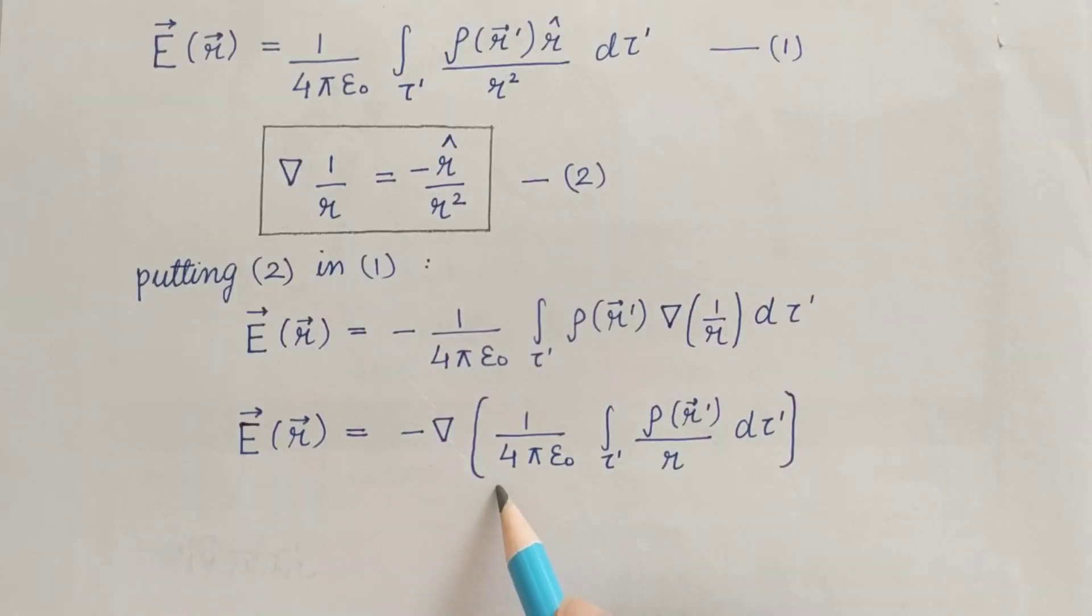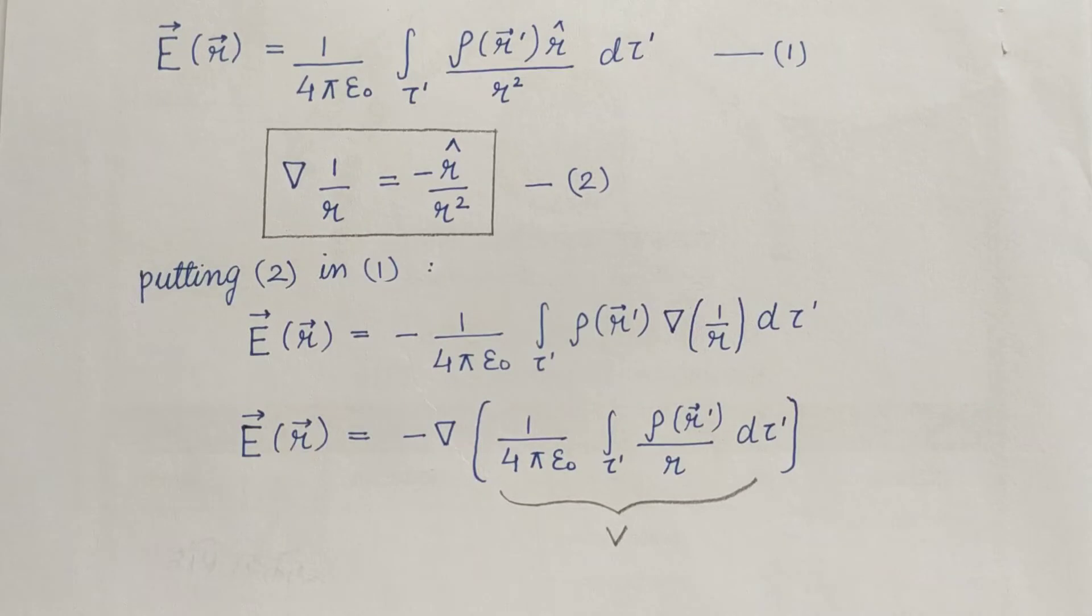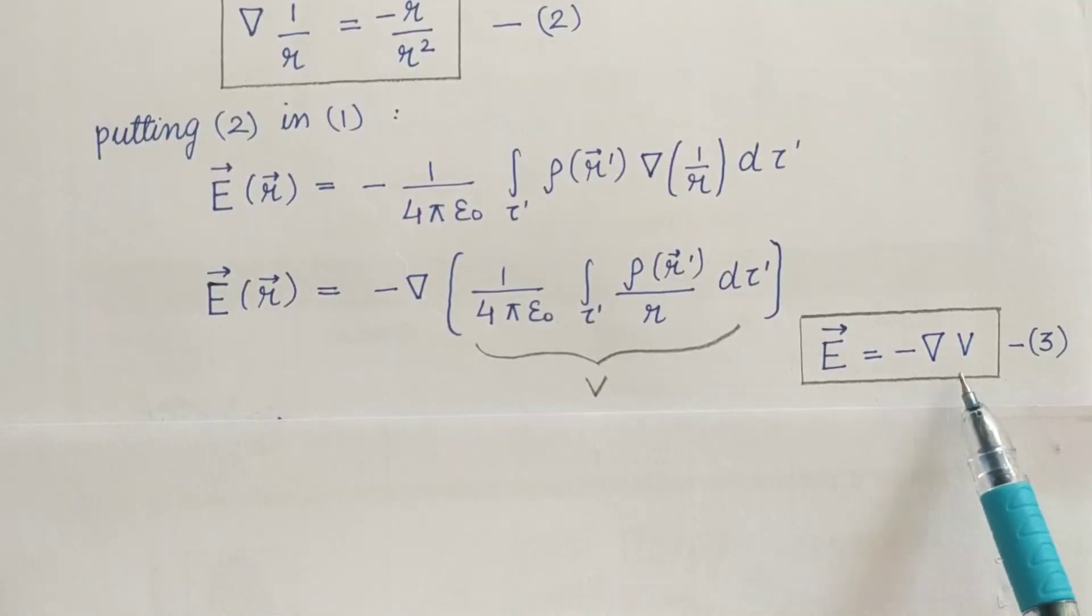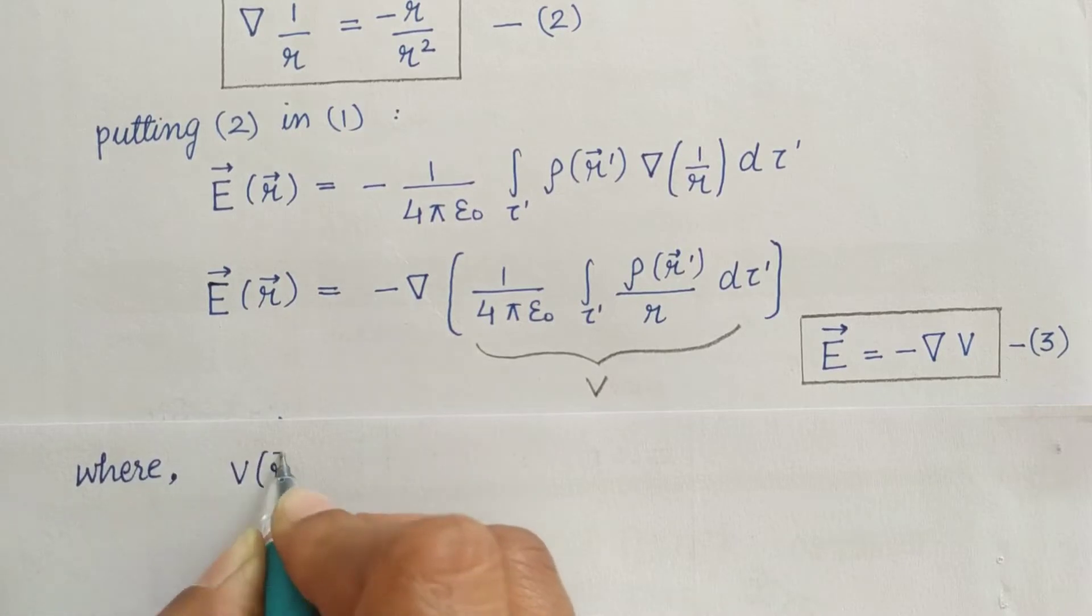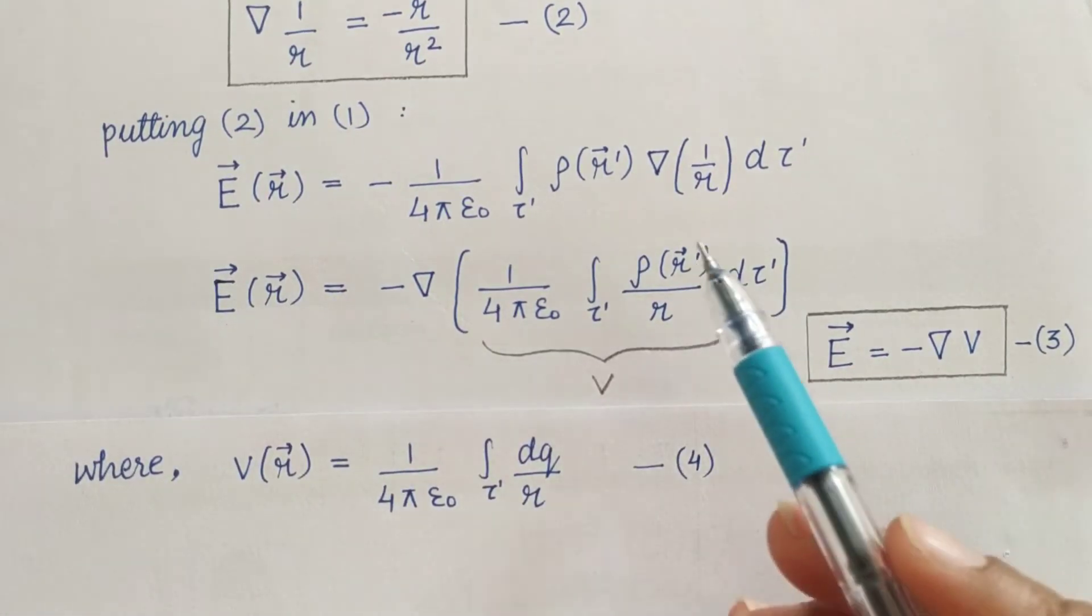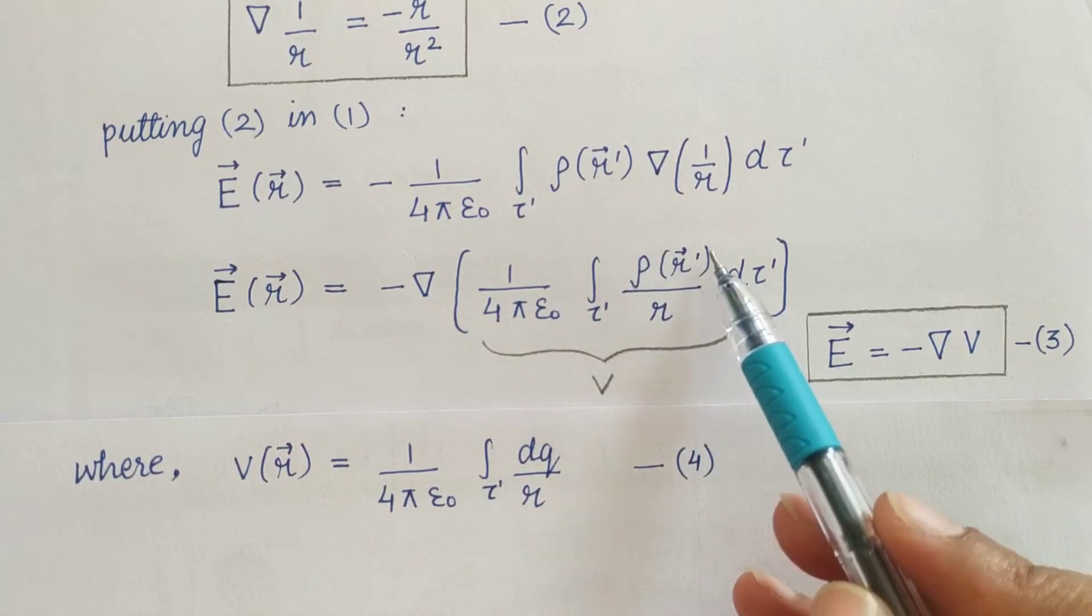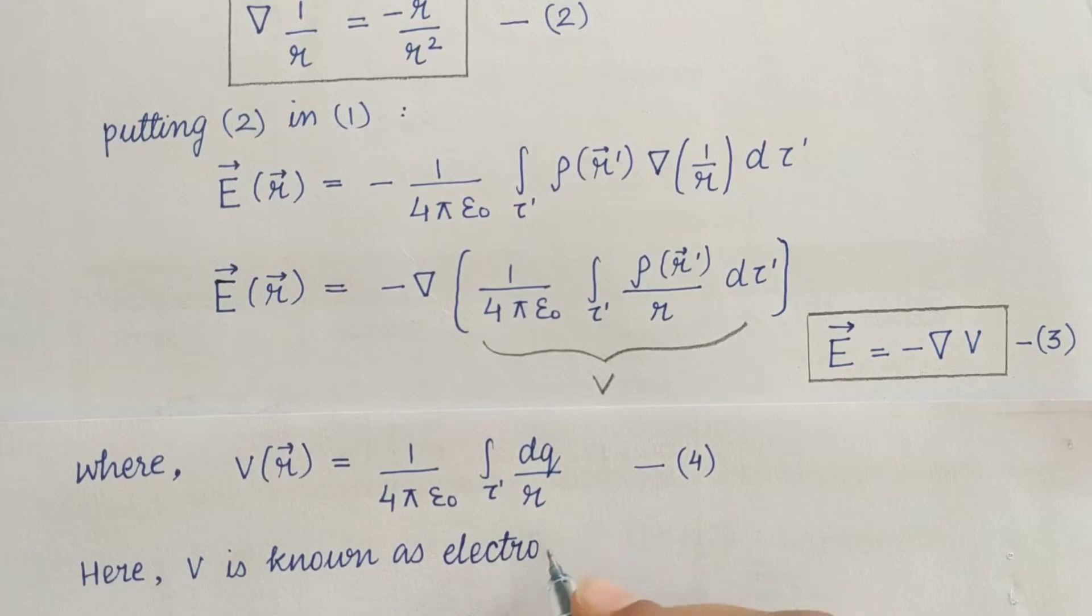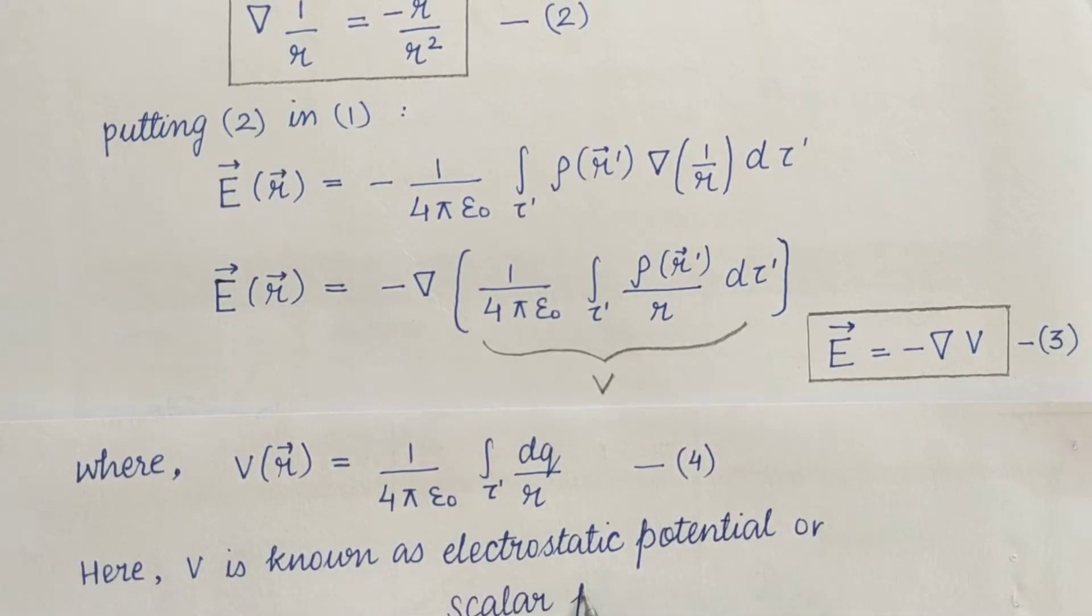And we will get it as V. Here this value in the bracket is V. We had changed this volume charge element into dq and this V is known as electrostatic potential or scalar potential.